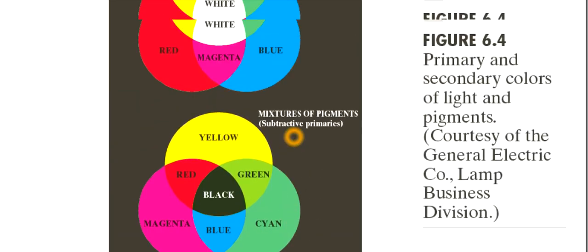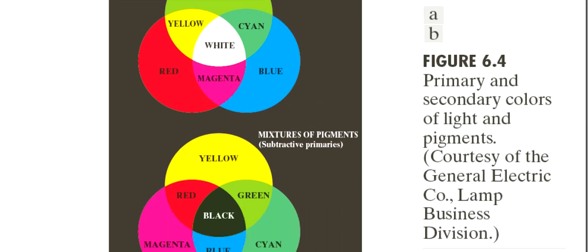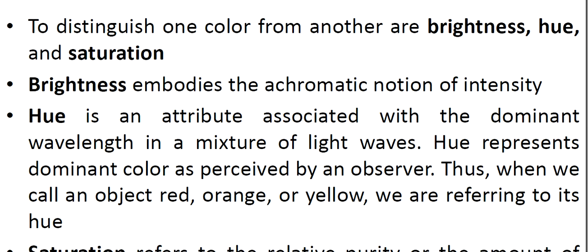Now, as you see, that's why we have primary and secondary colors. Primary colors are the important ones and combining with which you will get the different secondary colors. To distinguish one color from another, we have brightness, hue, and saturation.